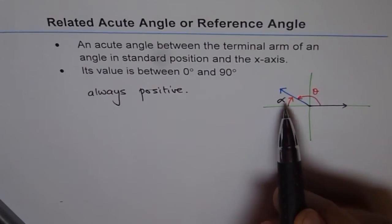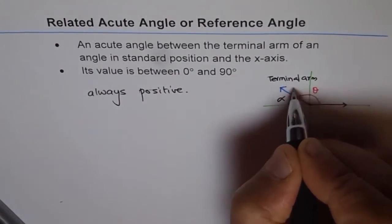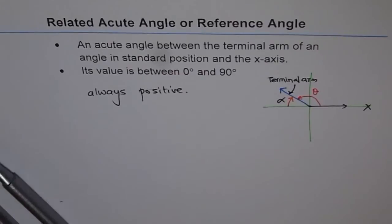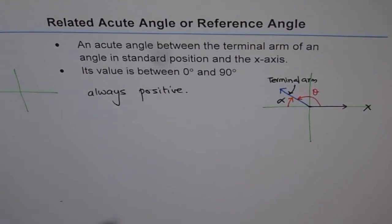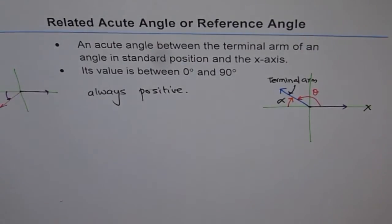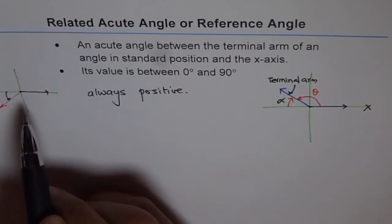Remember that the related acute angle is the angle between the terminal arm and the x-axis. Let me draw another example: if the terminal arm is in a different position, then the related acute angle is the angle between that terminal arm and the x-axis — whether it is the positive or negative x-axis, it doesn't matter. You can also say the angle between the terminal arm and the horizontal.